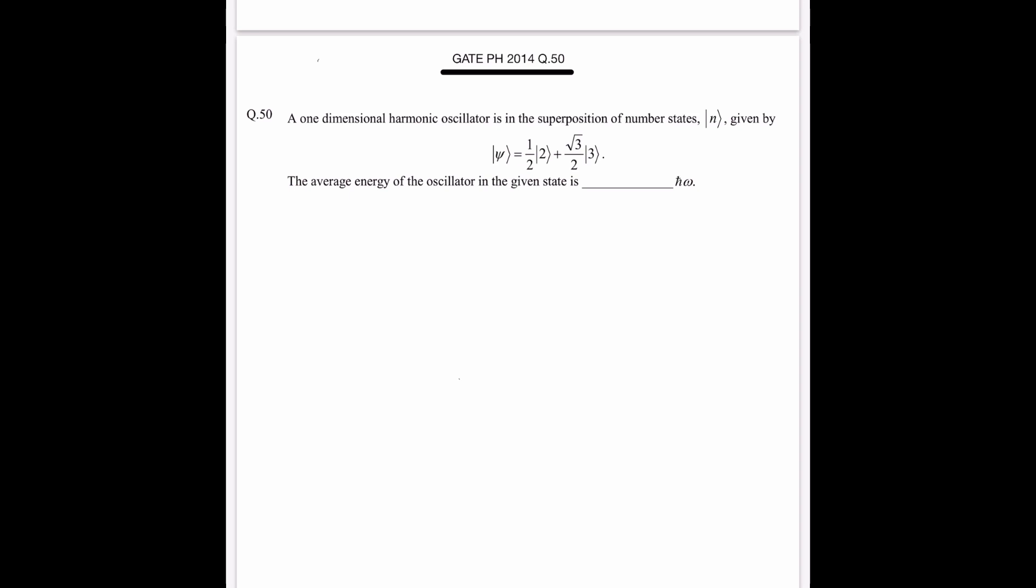We need to find the numerical value for this question. So let's solve this question. Psi is given by 1/2 plus √3/2 |3⟩. So this is the state given to us.